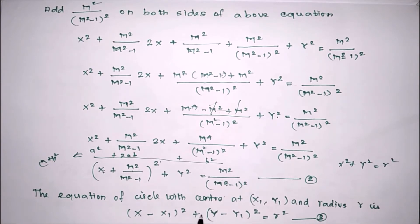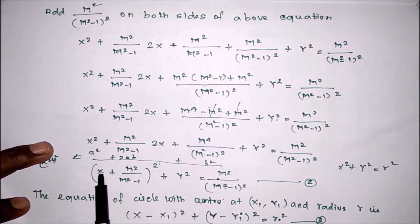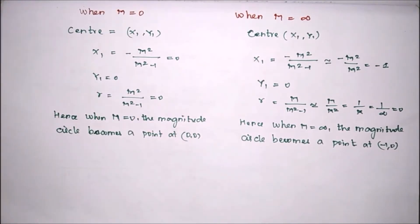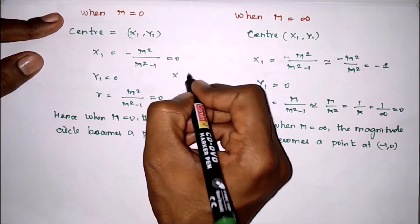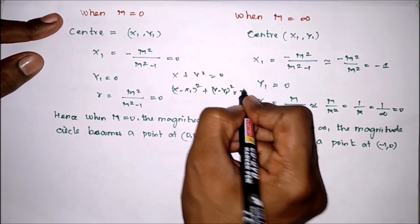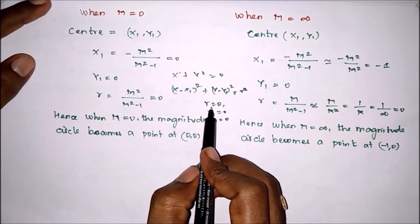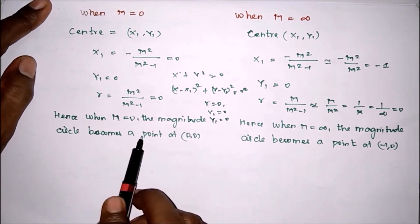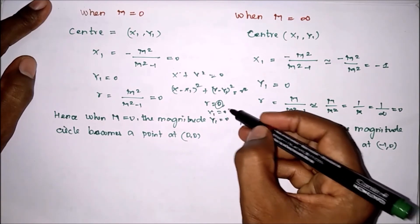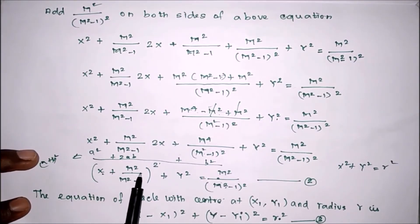When m equal to 0, from equation 2, x squared plus y squared equals 0. Comparing with the circle equation, radius equals 0 and x1 equals 0, y1 equals 0. Therefore, when m equal to 0, the magnitude circle becomes a point at the origin 0, 0 with radius equal to 0.